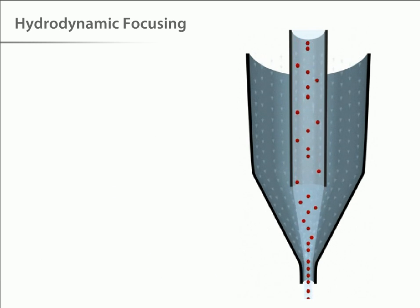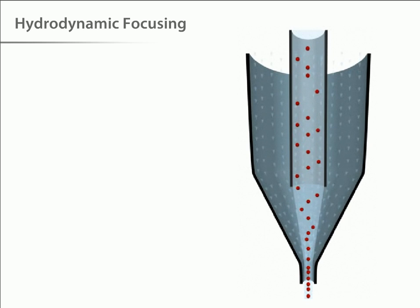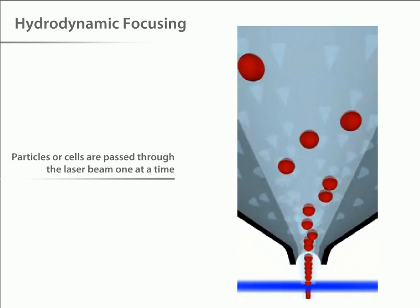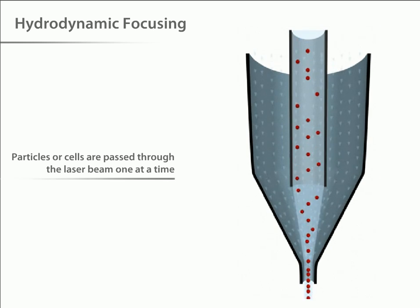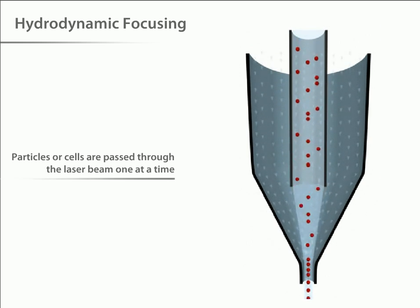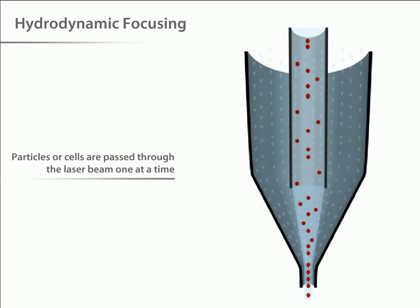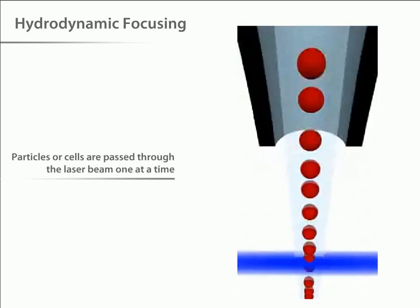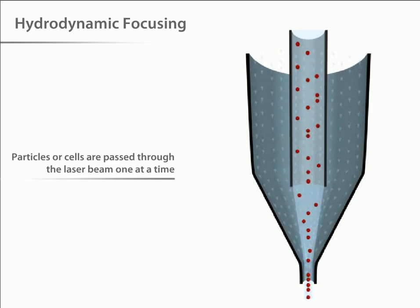Here we see how the sample is transported through the interrogation point. For accurate data collection, it is important that particles or cells are passed through the laser beam one at a time. Most flow cytometers accomplish this by injecting the sample stream containing the cells into a flowing stream of sheath fluid or saline solution. As you can see, the sample stream becomes compressed to roughly one cell in diameter. This is called hydrodynamic focusing.